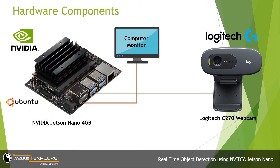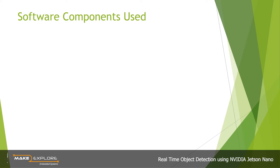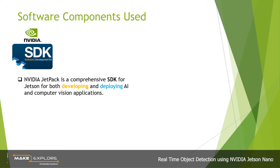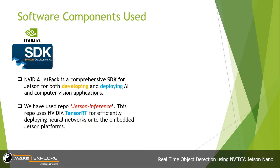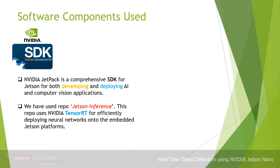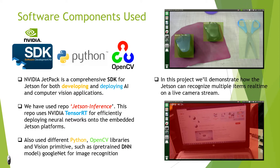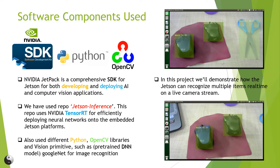This is all about hardware components. Now let's see what software components are used in this project. Here we have used the NVIDIA SDK software development kit called JetPack. NVIDIA JetPack is a comprehensive SDK for both developing and deploying AI and computer vision applications. We have also used a repo called Jetson Inference. This repo uses NVIDIA's TensorRT for efficiently deploying neural networks onto the embedded Jetson platforms. We have also used different Python OpenCV libraries and vision primitives, as well as deep neural network models such as GoogleNet for image recognition. In this project we will demonstrate how the Jetson can recognize multiple items in real time on a live camera stream.